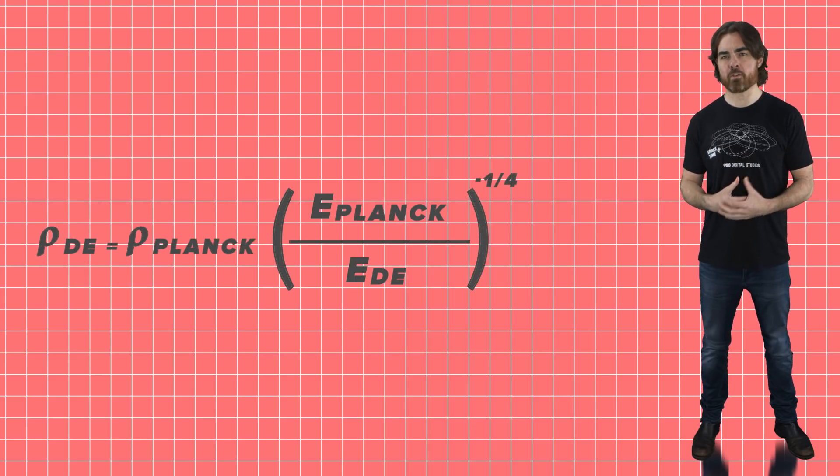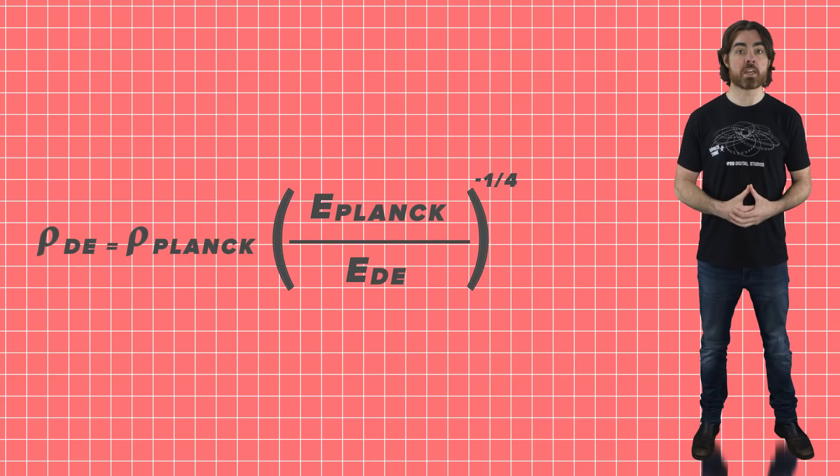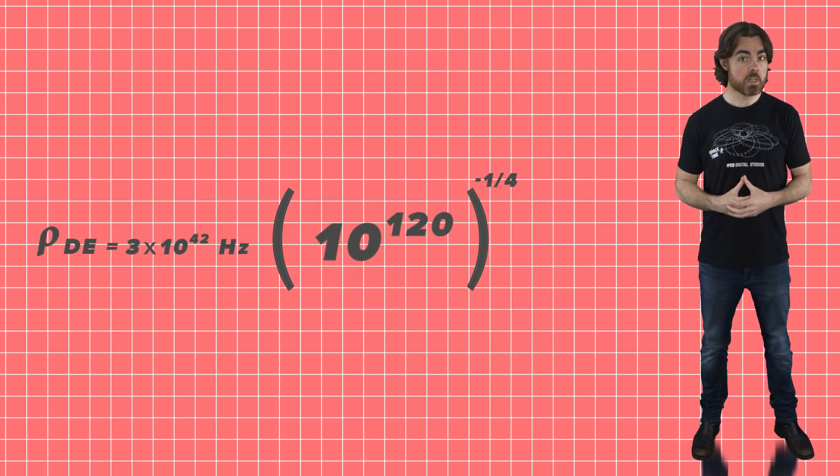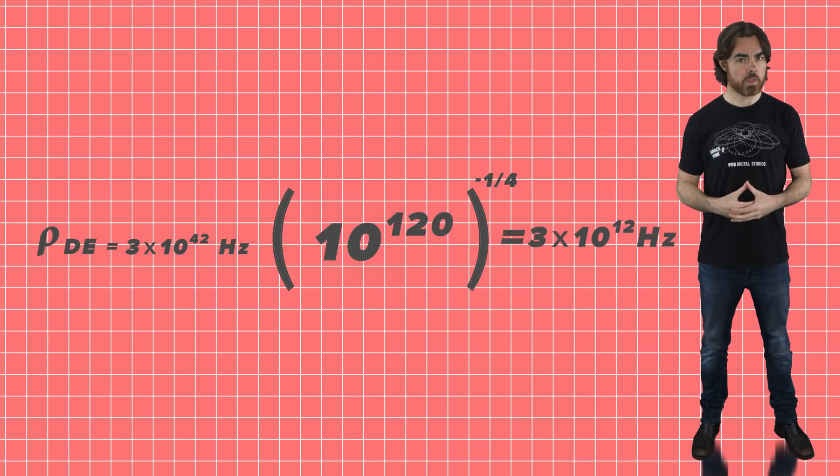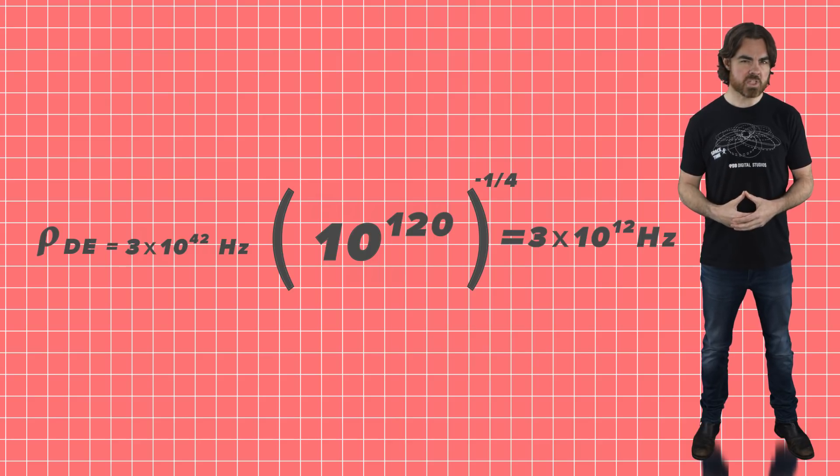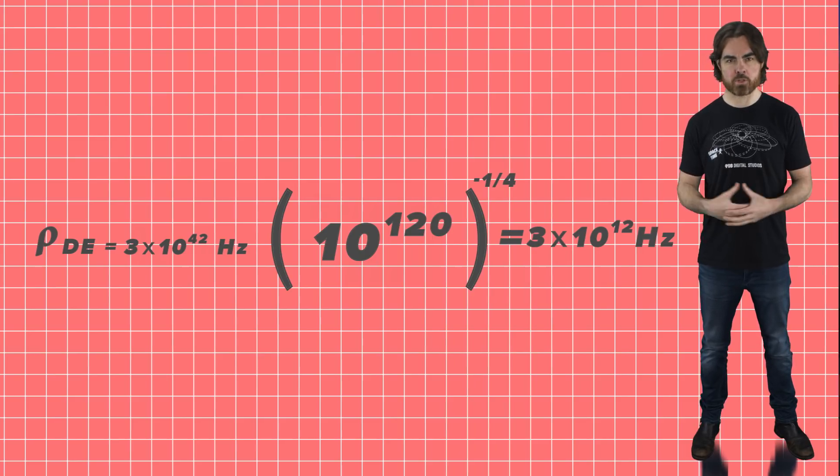There are a bunch of constants in the cutoff frequency vacuum energy relation, but they cancel out so we don't even have to know them. That ratio of vacuum energies is 10 to the power of 120, so we get a cutoff frequency for dark energy of 3 by 10 to the power of 12 hertz. That corresponds to a photon wavelength of a tenth of a millimeter, which is in the far infrared part of the spectrum.